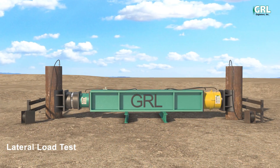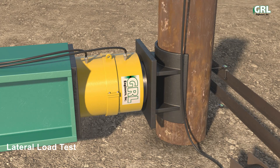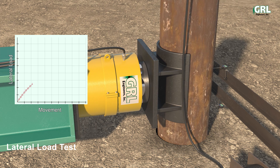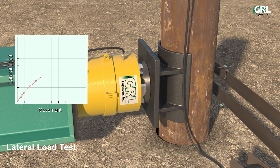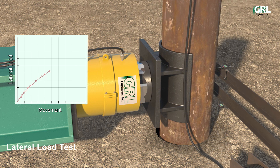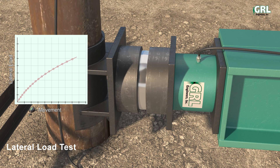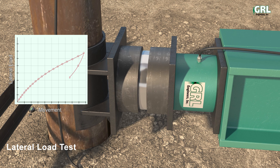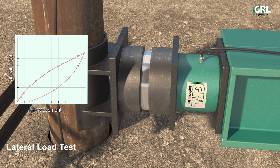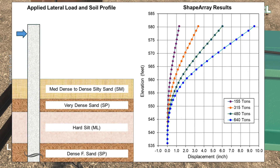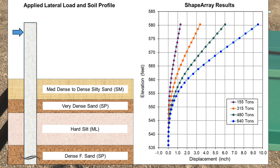Lateral load tests can be performed by pushing against a fixed reaction, pushing two foundations apart, or pulling two foundations together. Once the lateral load test system is arranged, lateral load is incrementally increased and the associated foundation head movement is recorded. After exceeding the required load or movement, the load is incrementally reduced and the associated foundation head movement again recorded. If additional instrumentation is included, the deflected foundation shape versus depth as a function of the applied lateral load can be presented.